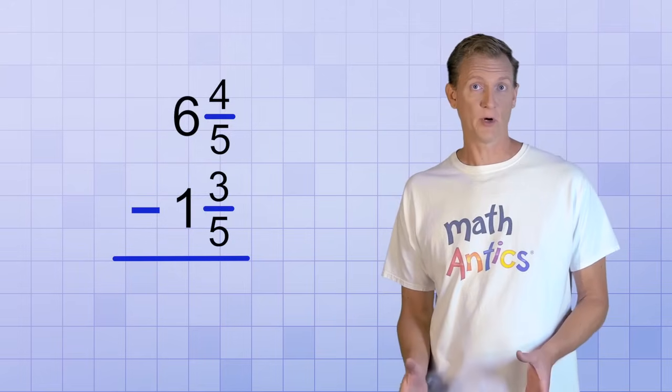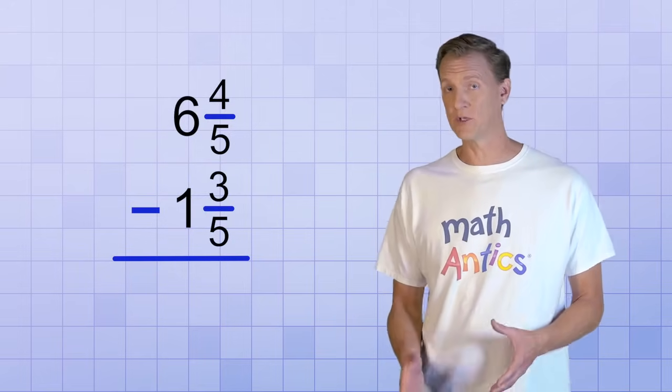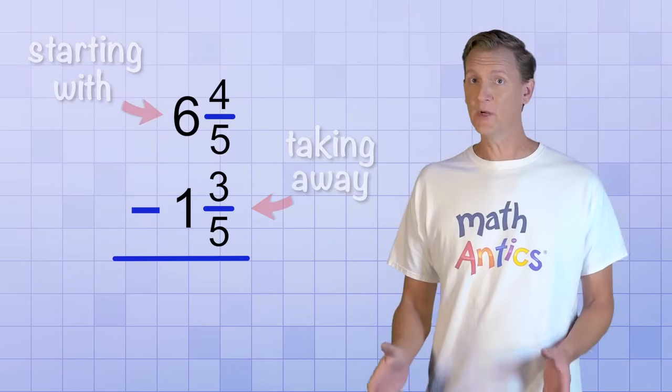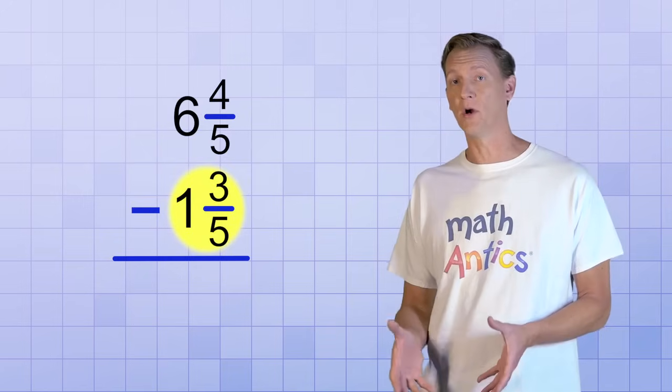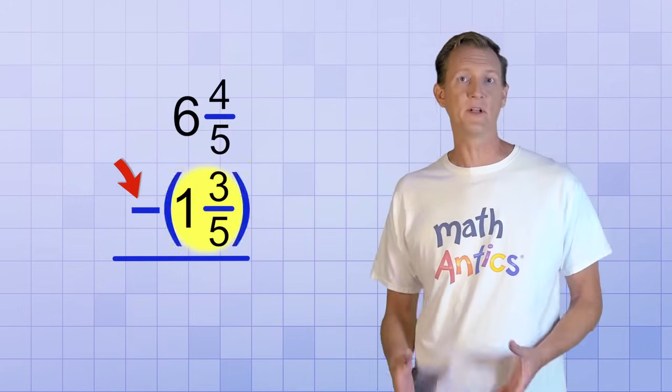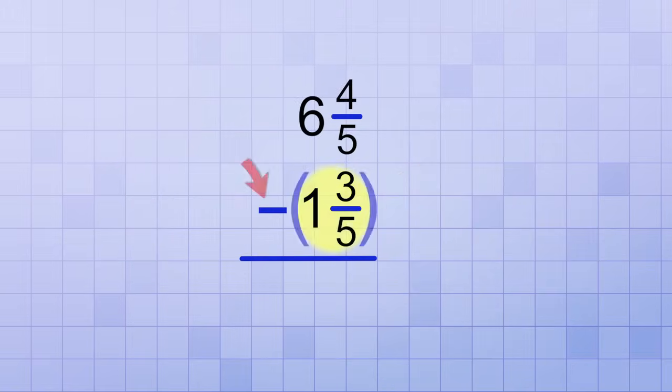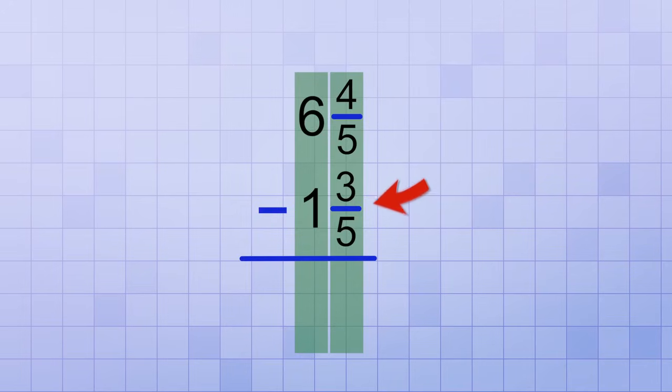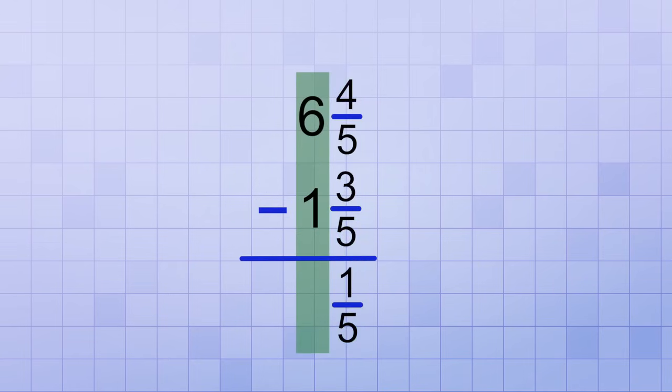Since the order of a subtraction problem is important, we need to be sure to put the mixed number that we're starting with on top and the mixed number that we're taking away on the bottom. And doing that helps us remember that both parts of a mixed number are being subtracted, even if we don't put parentheses around them to remind us. That's because we'll subtract the parts column by column just like we would in multi-digit subtraction. We'll subtract the fraction on the bottom from the fraction on the top and then we'll subtract the whole number on the bottom from the whole number on the top. 4 fifths minus 3 fifths is 1 fifth and 6 minus 1 is 5. So the answer is just 5 and 1 fifth.